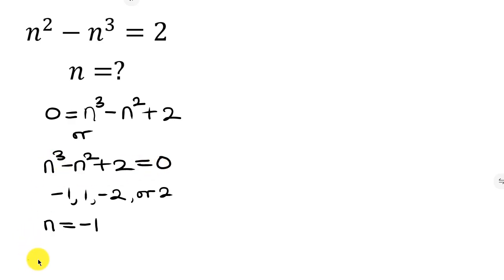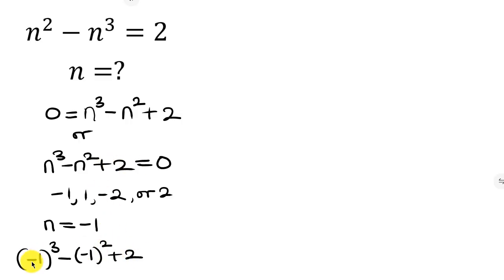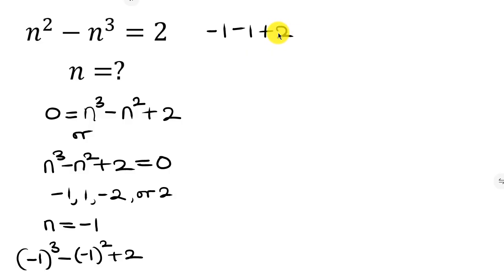Plugging in n = -1: negative 1 cubed minus negative 1 squared plus 2. That gives negative 1 minus 1 plus 2, which equals negative 2 plus 2.